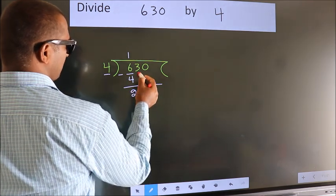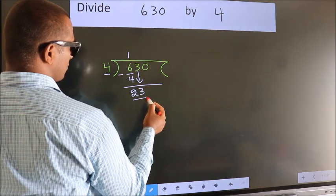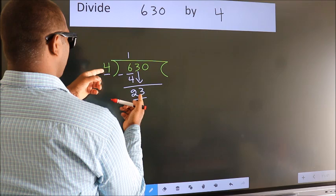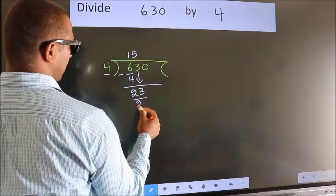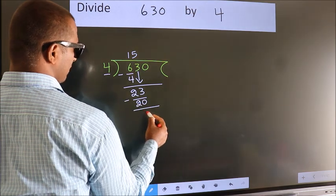After this, bring down the beside number. So, 3 down. So, 23. A number close to 23 in 4 table is 4 fives, 20. Now, we subtract. We get 3.